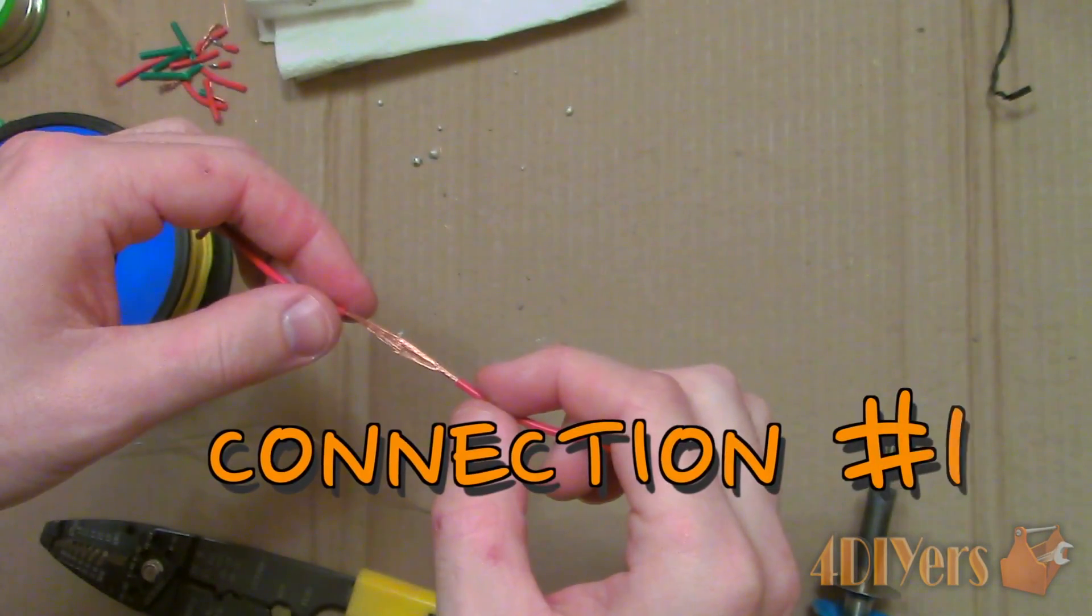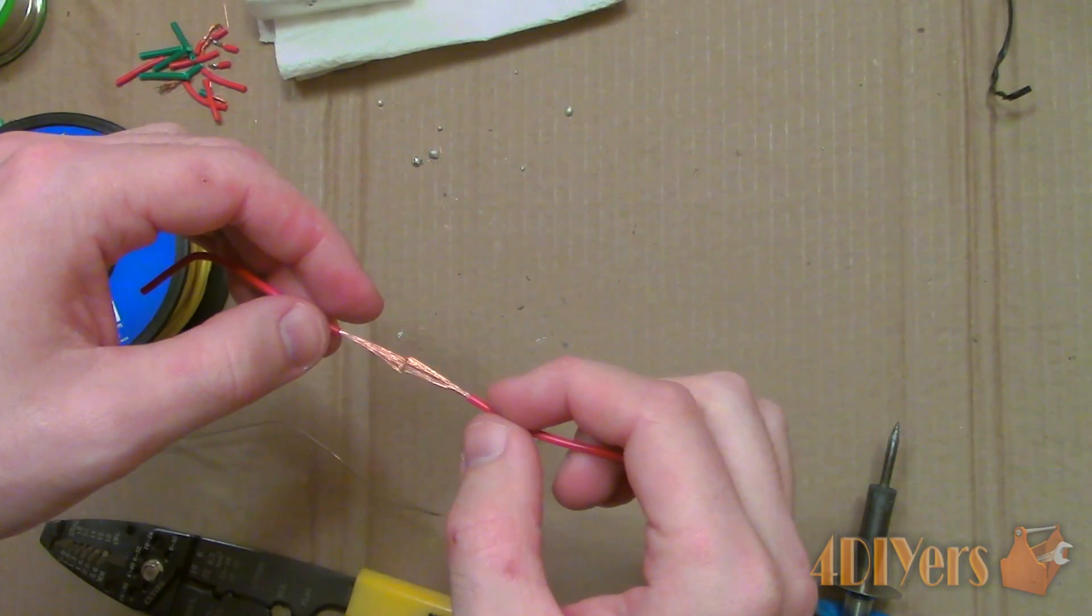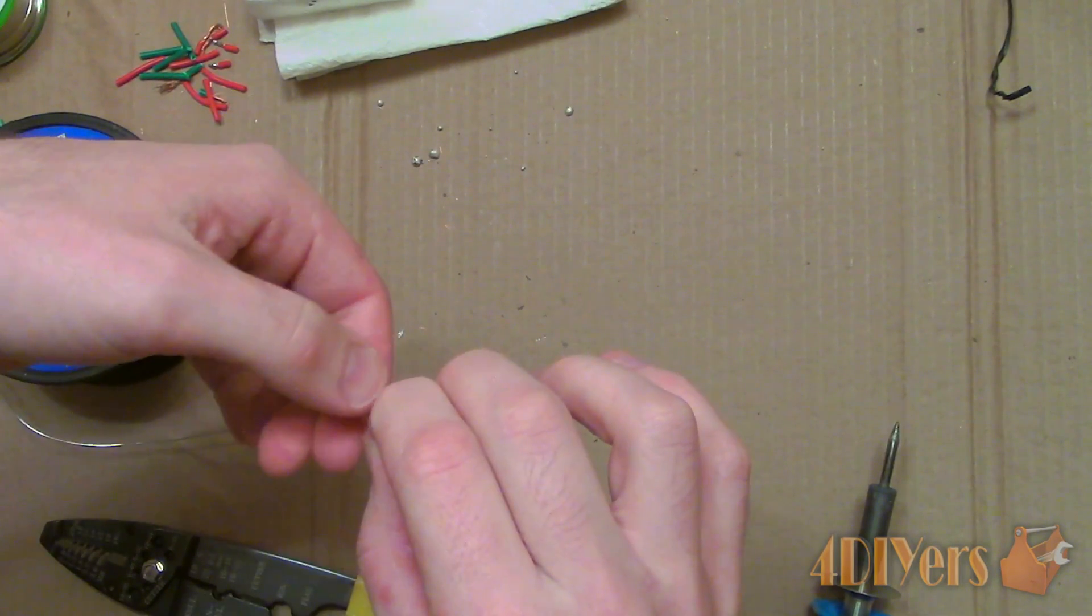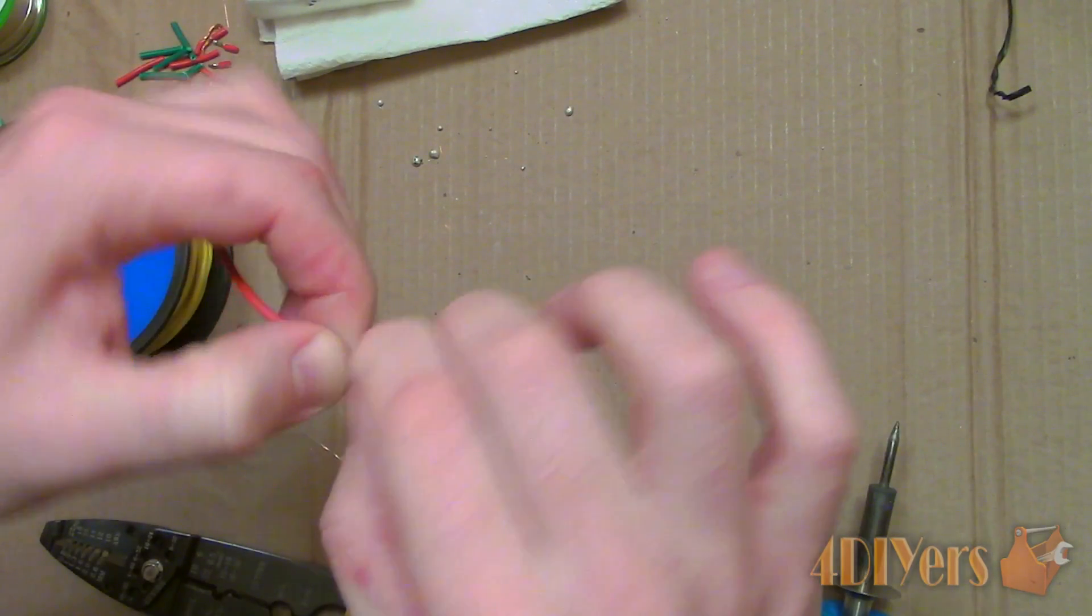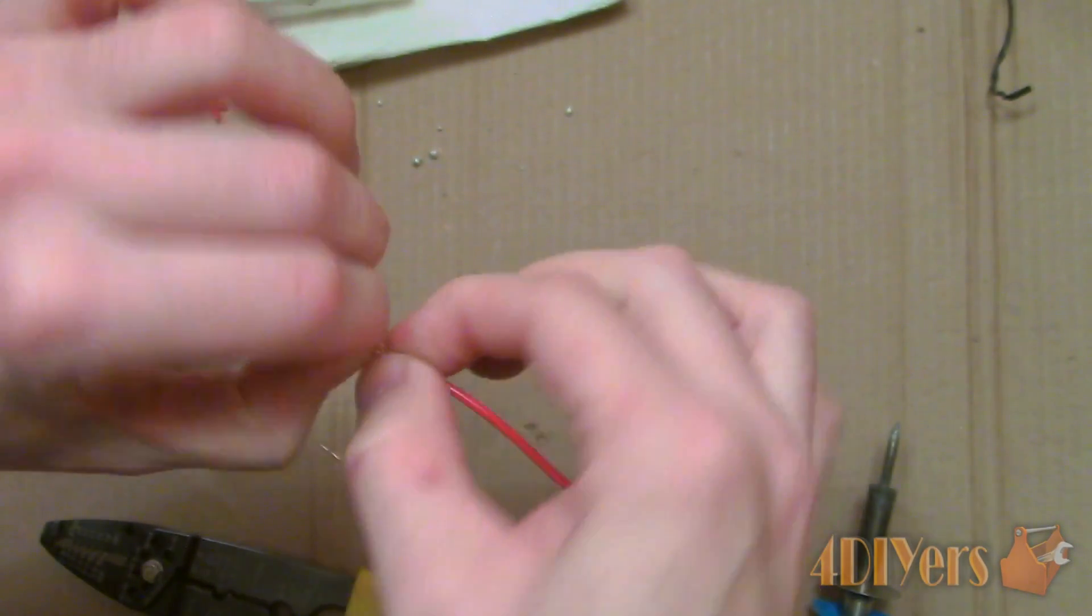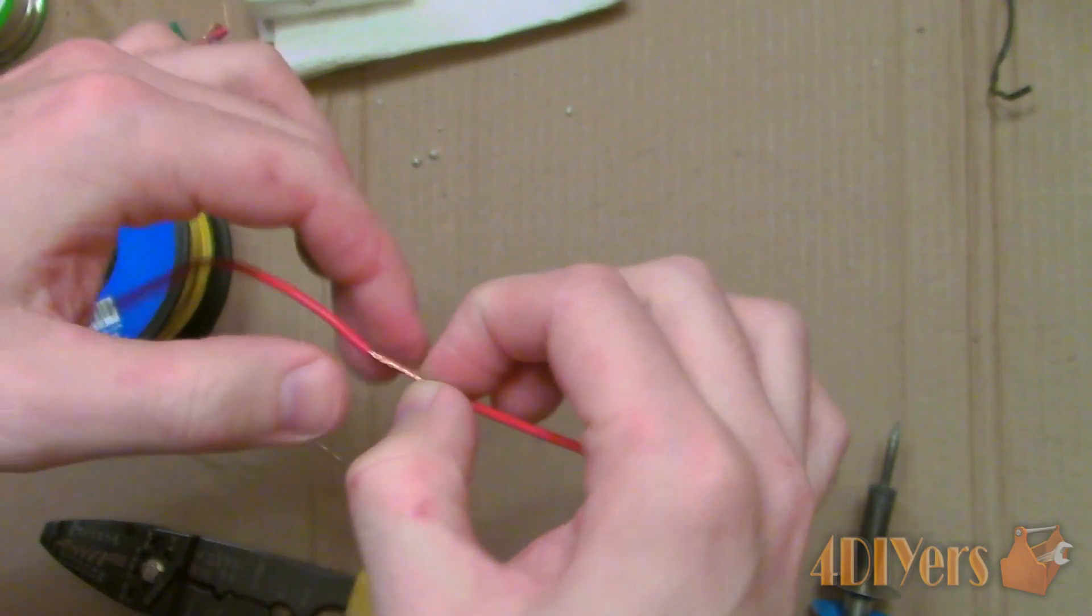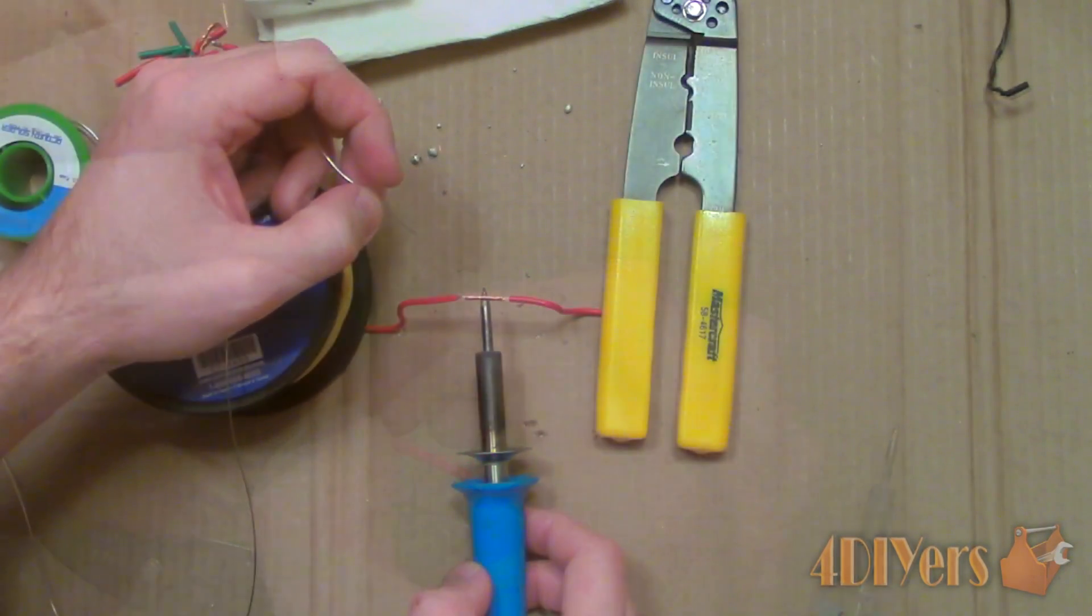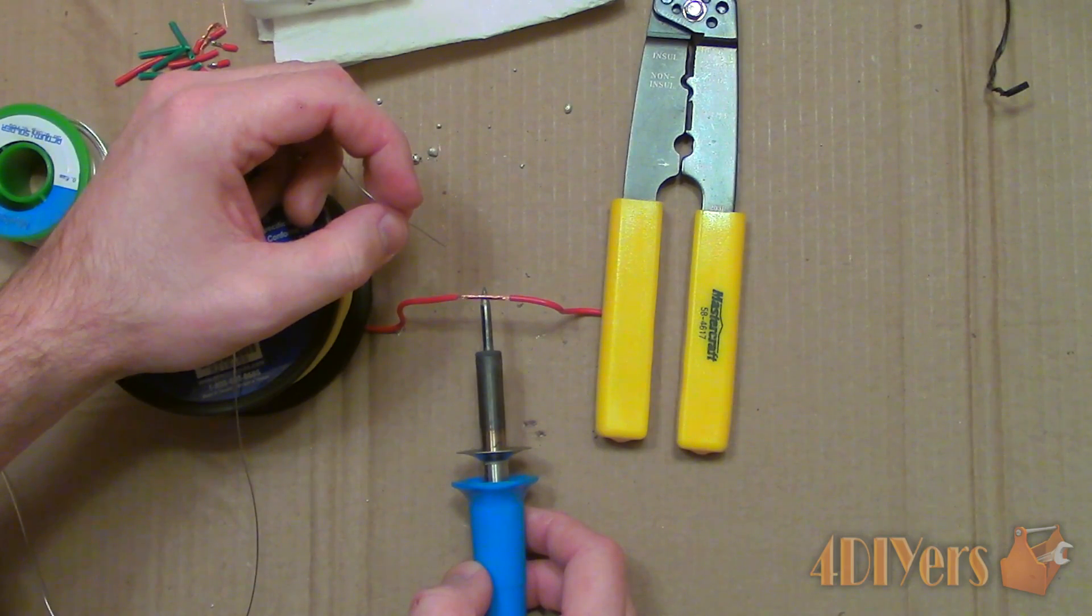Starting with number one. First is a connection used by many, similar type of technique compared to the Western Union splice which I will demonstrate in a moment. Strip the insulation back roughly 3 quarters of an inch. Spread the strands of wire. Then insert the strands into each other like so. Continue to twist the strands around each other, somewhat interlocking the connection.